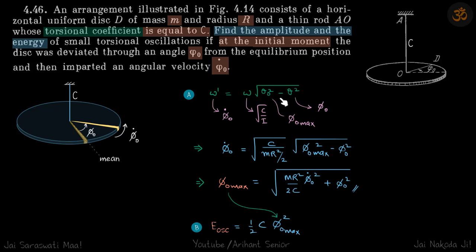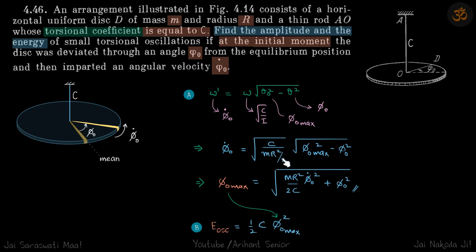Let's write the formula for the angular velocity at a general angle theta for a body performing torsional SHM: omega-dash = omega·√(theta-naught² − theta²), where theta-naught is the maximum angle and theta is the current angle. Substituting the problem's variables: omega-dash = φ₀-dot, omega = √(c/I) where I = mr²/2 for a disc, theta-naught is what we need to find (φ-naught-max), and theta = φ₀. Plugging in these values gives φ-naught-max, which is the amplitude.